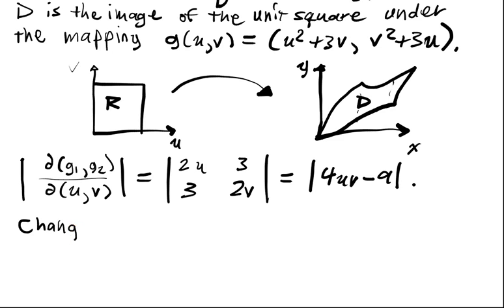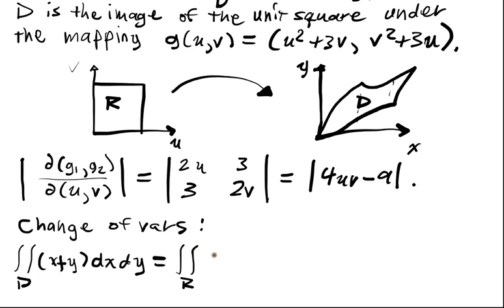So, change of variables. So, we transform this integral over the region D. We have the function x plus y dx dy. Now it's going to be integral over the region R. Now we just substitute in everything for x. So, x becomes u squared plus 3v. And y becomes v squared plus 3u.